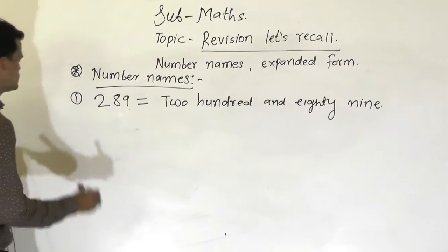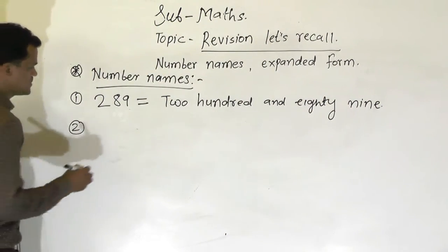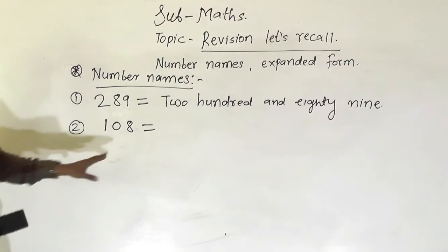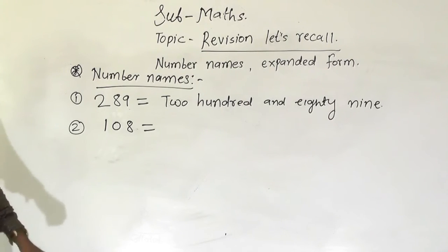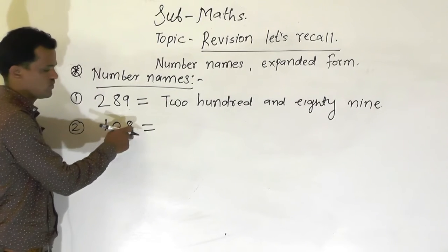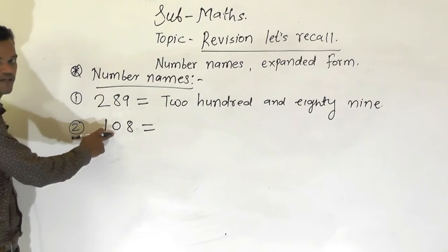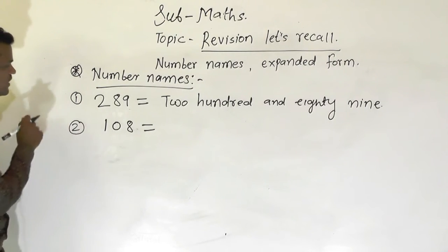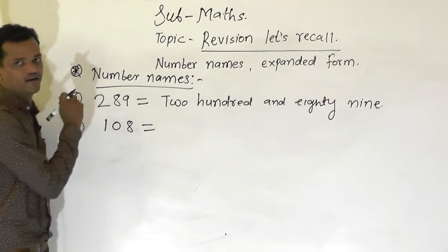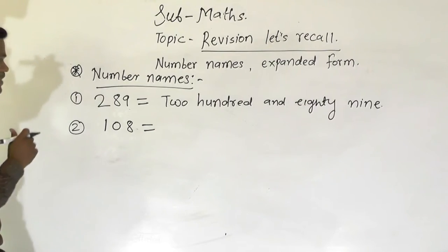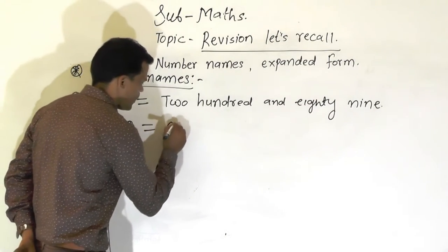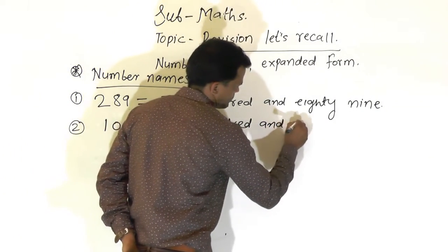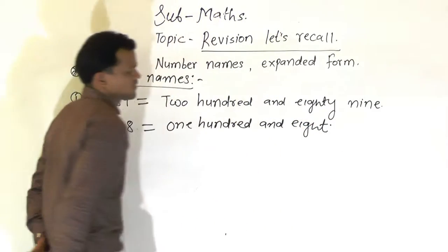One more example. The number is 108 and we have to identify this number and write the spelling. In this number, 8 comes at the ones place, 0 comes at the tens place, and 1 comes at the hundreds place. So this number is 108 — write the spelling of this number: one hundred and eight.